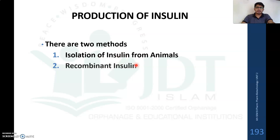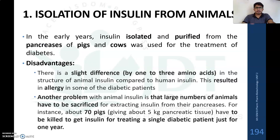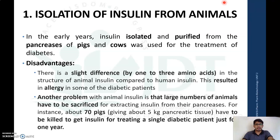The first method was isolation of insulin from animals, which was the previous conventional method. But there are many disadvantages, so it is not used nowadays. We are now using recombinant insulin produced by genetic engineering, or recombinant DNA technology.